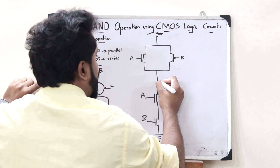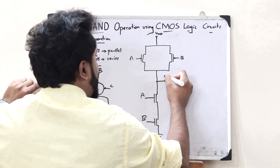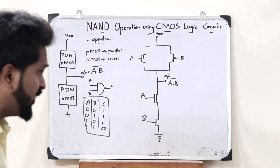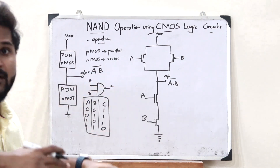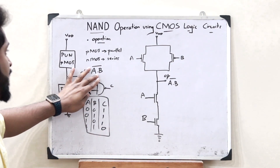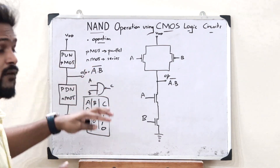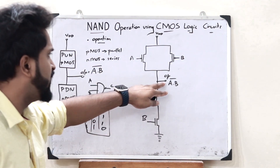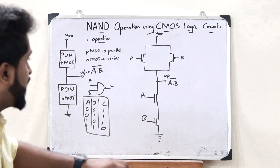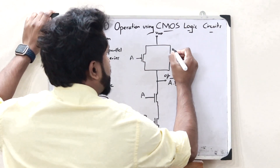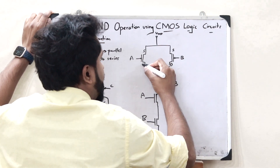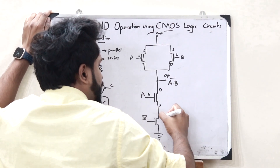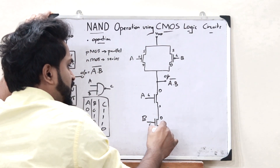We take the output here, and this output is simply A dot B, the whole complement. If we needed A dot B, we would pass it through an inverter; but since we need A dot B complement itself, we take the output directly here. For the PMOS transistors: this is the source, this is the drain, and this is the gate. For the NMOS transistors: this is the drain, this is the gate, and this is the source.